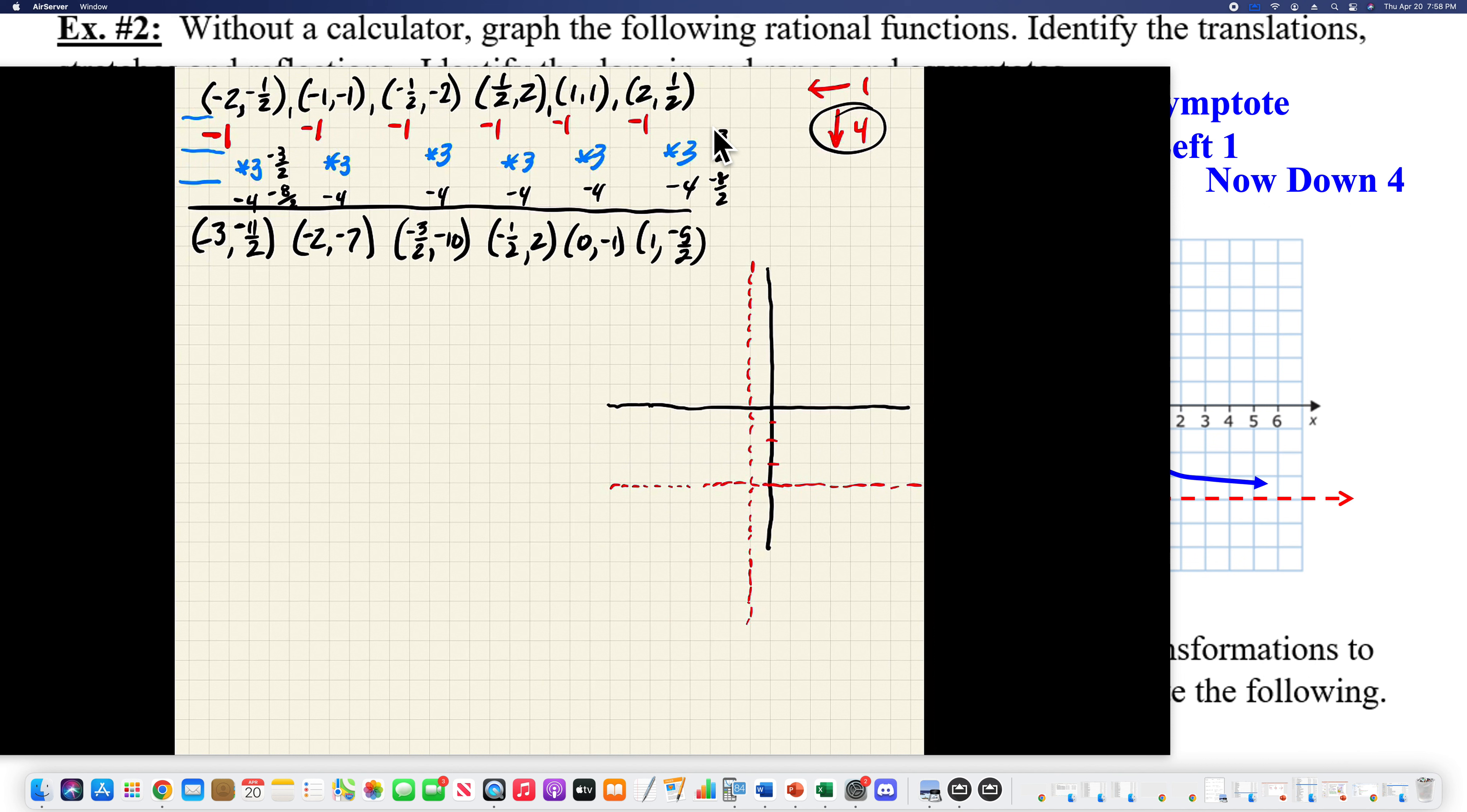And so there's this location of my six points. So I could go plot them. So one, two, three, down eleven-halves. Just count your halves. One, two, three, four, five, six, seven, eight, nine, ten, eleven. Make your point. Next, we're at negative two, seven. There's negative two. One, two, three, four, five, six, seven. Make that point. Negative three-halves. So we're right there. We've got to go down ten. This is seven. So eight, nine, ten. Right there. And then draw your graph.